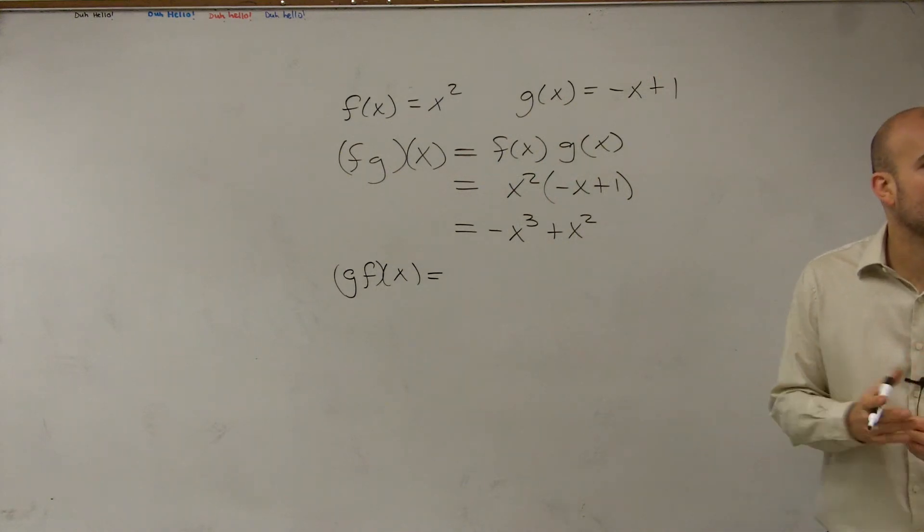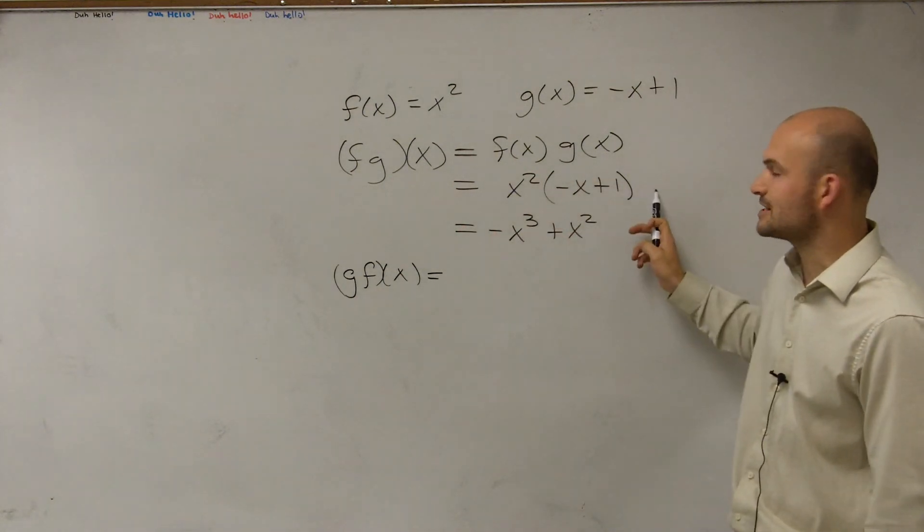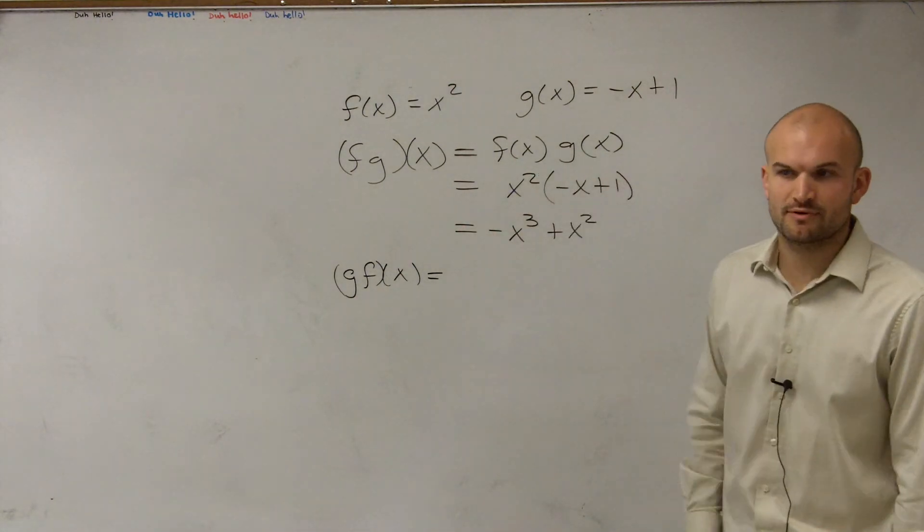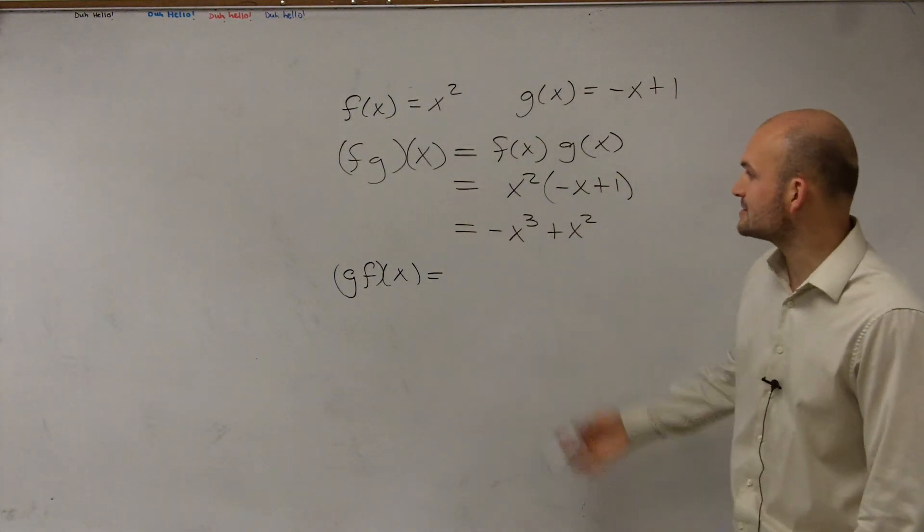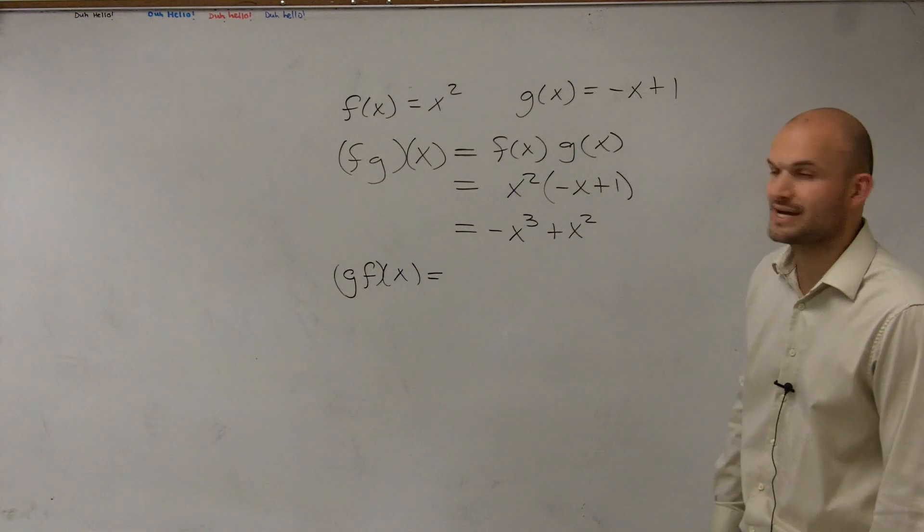Because it doesn't matter which way you multiply, you'd still get the same answer. You'd just be multiplying x² using the distributive property from the other side. However, you'd still get the exact same answer. So f times g of x equals -x³ + x².